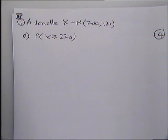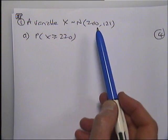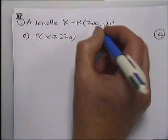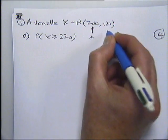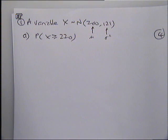Okay, so looking at the first example here we've got a variable X which follows a normal distribution with mean mu and standard deviation sigma squared. The question is asking us to find the probability that X is greater than or equal to 220.